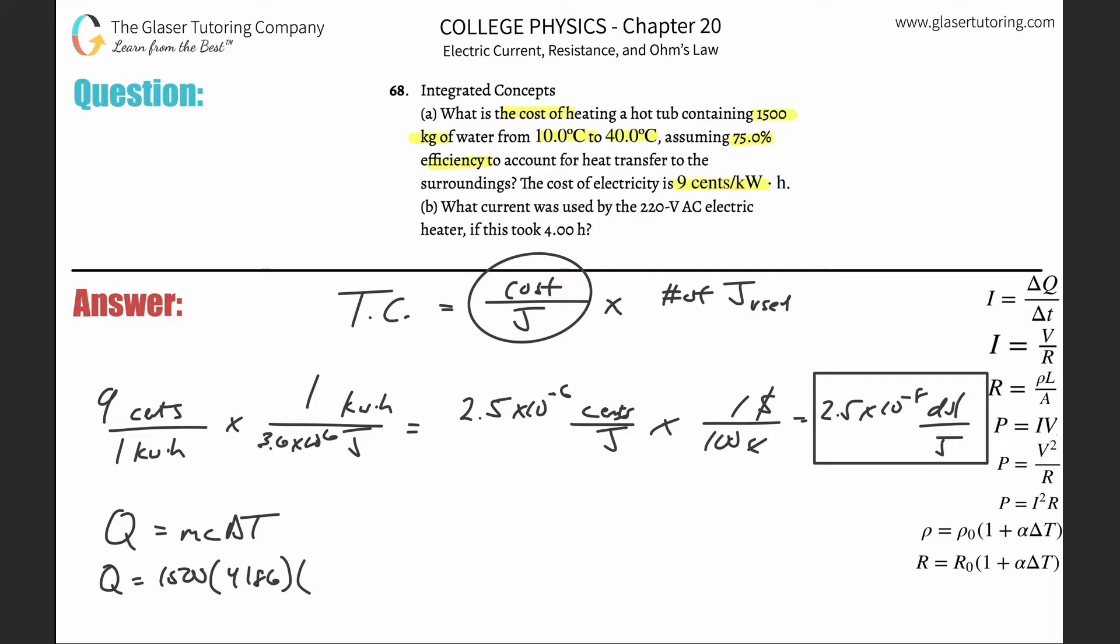The temperature change then here is going to be from 10 to 40. So in other words, it's final minus initial. So it's 40 minus the 10. So this is 1500 multiplied then by 4186 times 30. So there's approximately now 1.88 times 10 to the, let's see, 3678. So that's about 188 million joules of energy needed to do that.